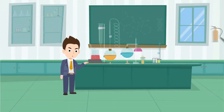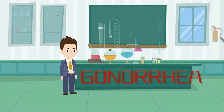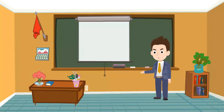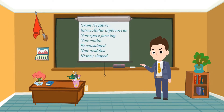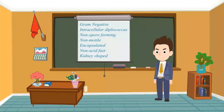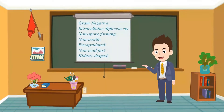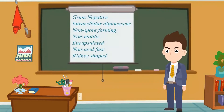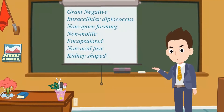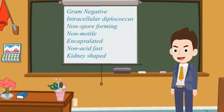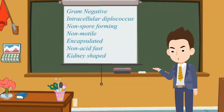Today we're going to be looking at Gonorrhea. Gonorrhea is a sexually transmitted infection caused by Neisseria gonorrhoeae. This is a gram-negative intracellular diplococcus that is non-spore-forming, non-motile, encapsulated, non-acid-fast bacteria which appears kidney-shaped under the microscope.